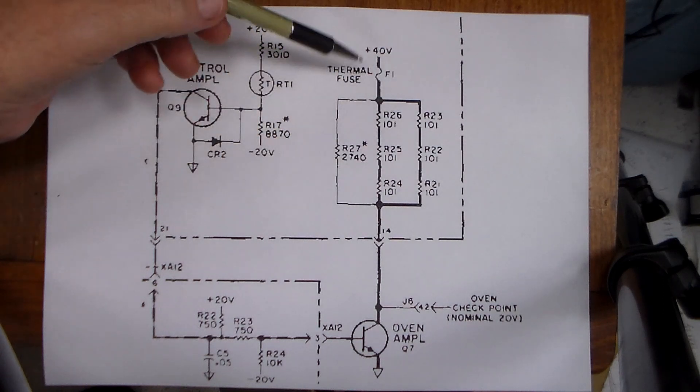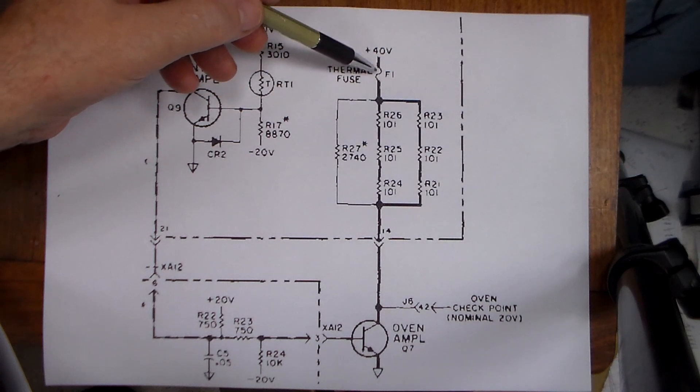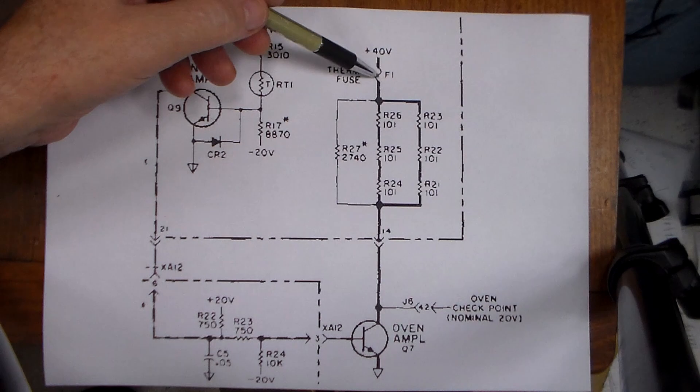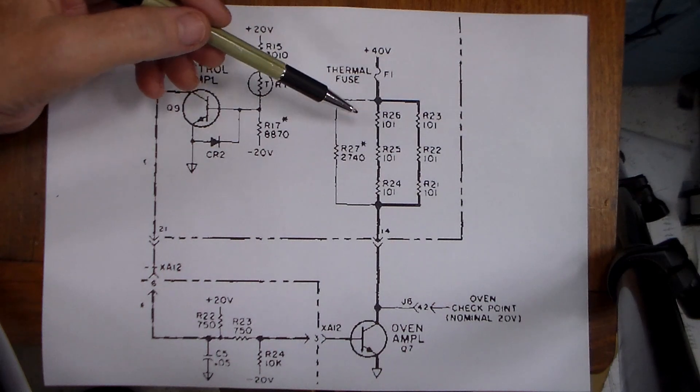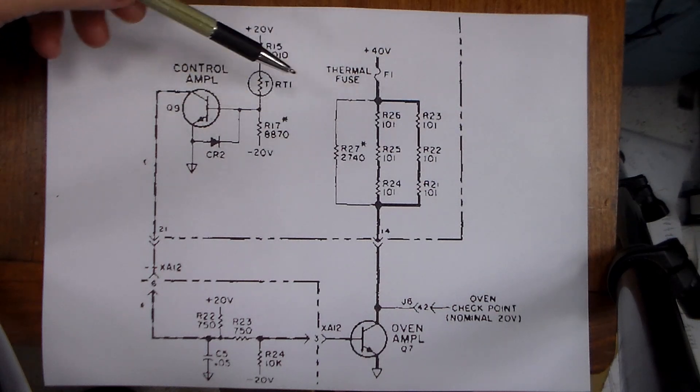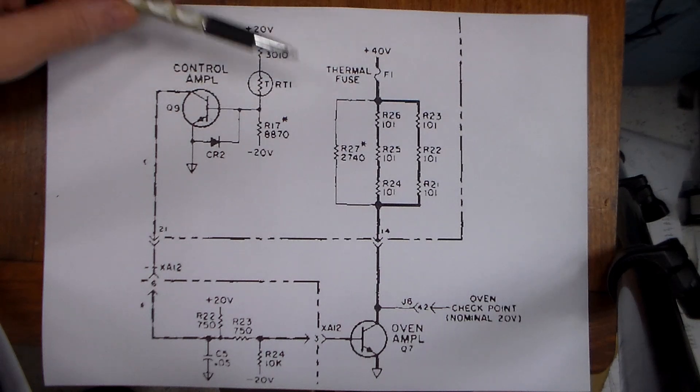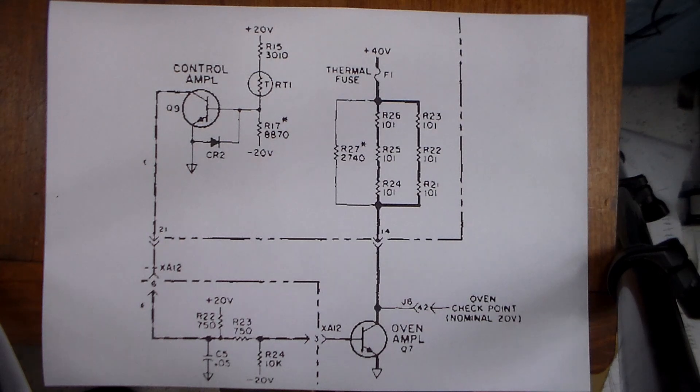And they obviously heat the oven. And then finally, we've got fuse F1, which is a thermal fuse that at about 107 degrees C will blow. So at well over the nominal operating temperature to protect the componentry in the oven, this fuse will blow if the circuit fails for any reason.